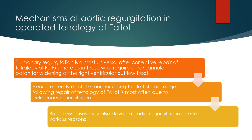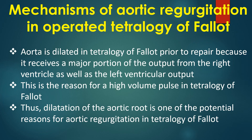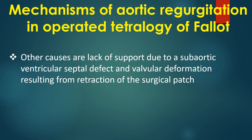Pulmonary regurgitation is almost universal after corrective repair of Tetralogy of Fallot, more so in those who require a trans-annular patch for widening of the right ventricular outflow tract. Hence, an early diastolic murmur along the left sternal edge following repair is most often due to pulmonary regurgitation. A few cases may also develop aortic regurgitation. The aorta is dilated in Tetralogy of Fallot prior to repair because it receives a major portion of output from the right ventricle as well as the left ventricular output, explaining the high volume pulse. Dilatation of the aortic root, lack of support due to a sub-aortic VSD, and valvular deformation from retraction of the surgical patch are potential reasons for aortic regurgitation.